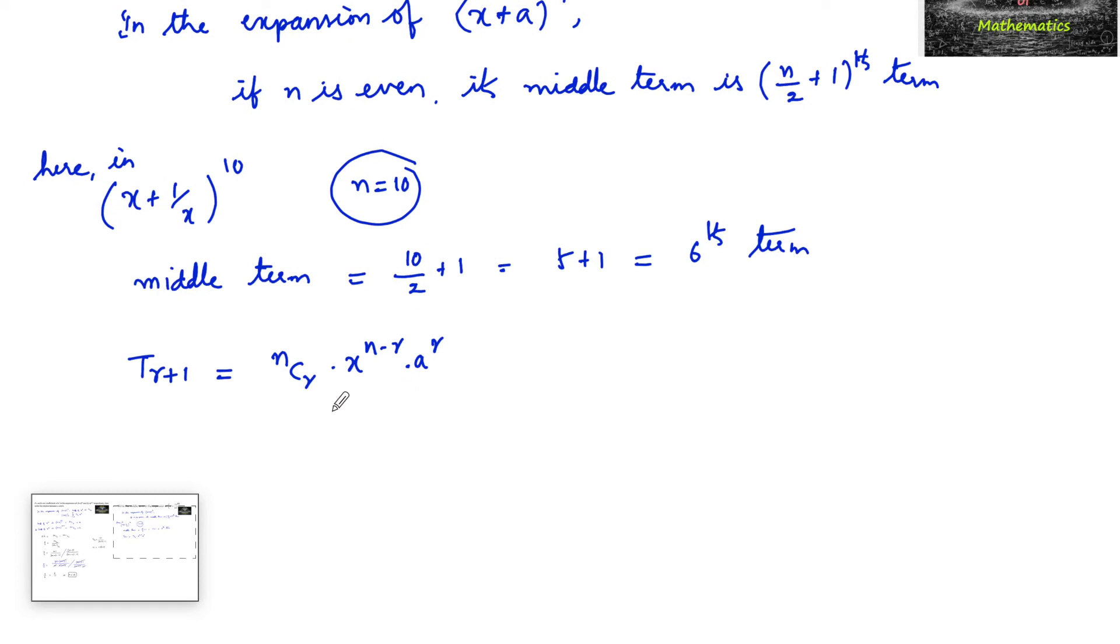So comparing, we can write n is equal to 10, and we want the 6th term, so it is t 5 plus 1. So r is equal to 5, and x is nothing but x to the power of 10 minus 5.